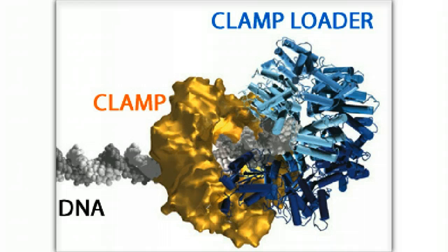The clamp loader is a pentamer composed of three gamma polypeptides, a delta and a delta prime polypeptide. It binds ATP and catalyzes its hydrolysis to form ADP and phosphate, a highly thermodynamically favorable reaction.